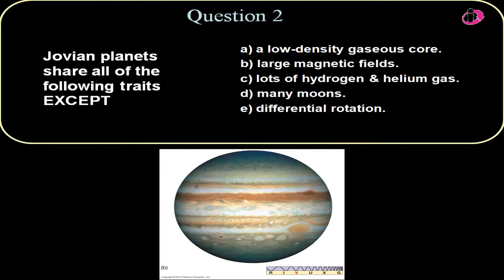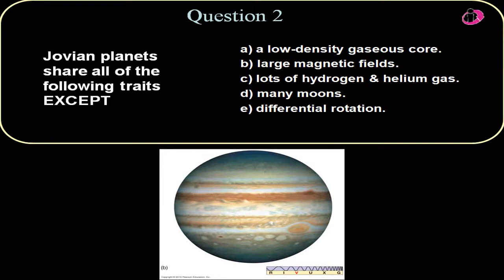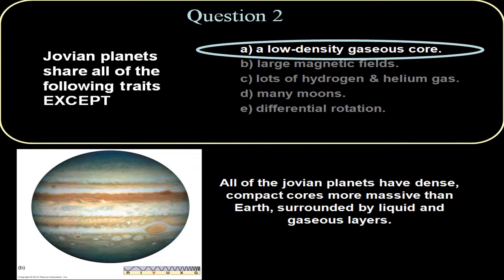A, a low density gaseous core. No. The Jovians have real dense solid cores. Probably more dense than the Earth itself. So they do not have a low density gaseous core.